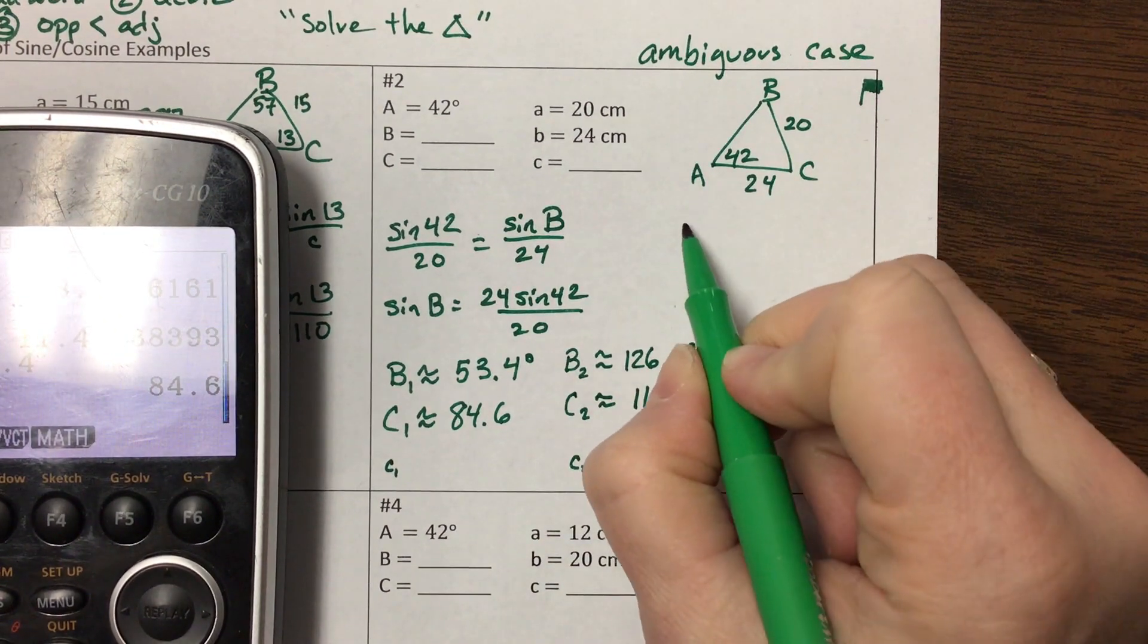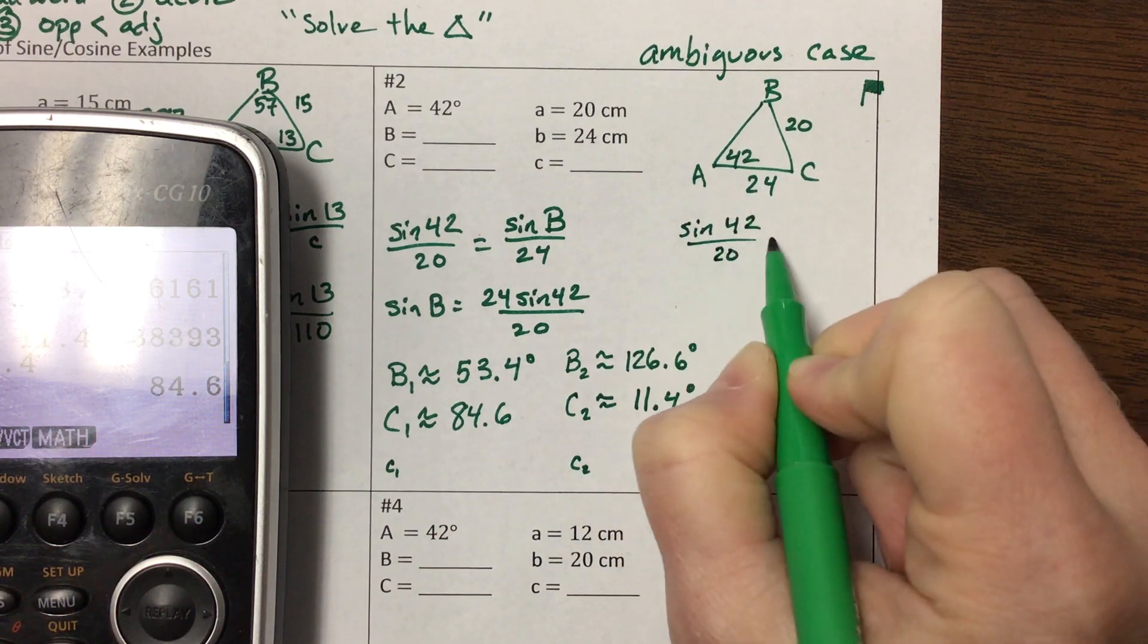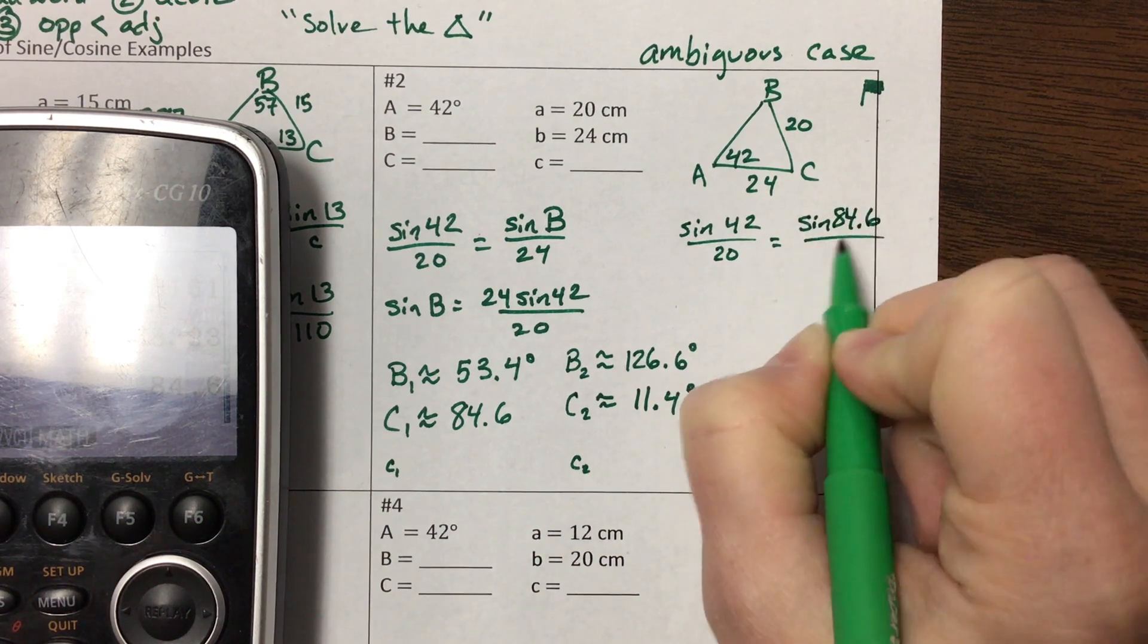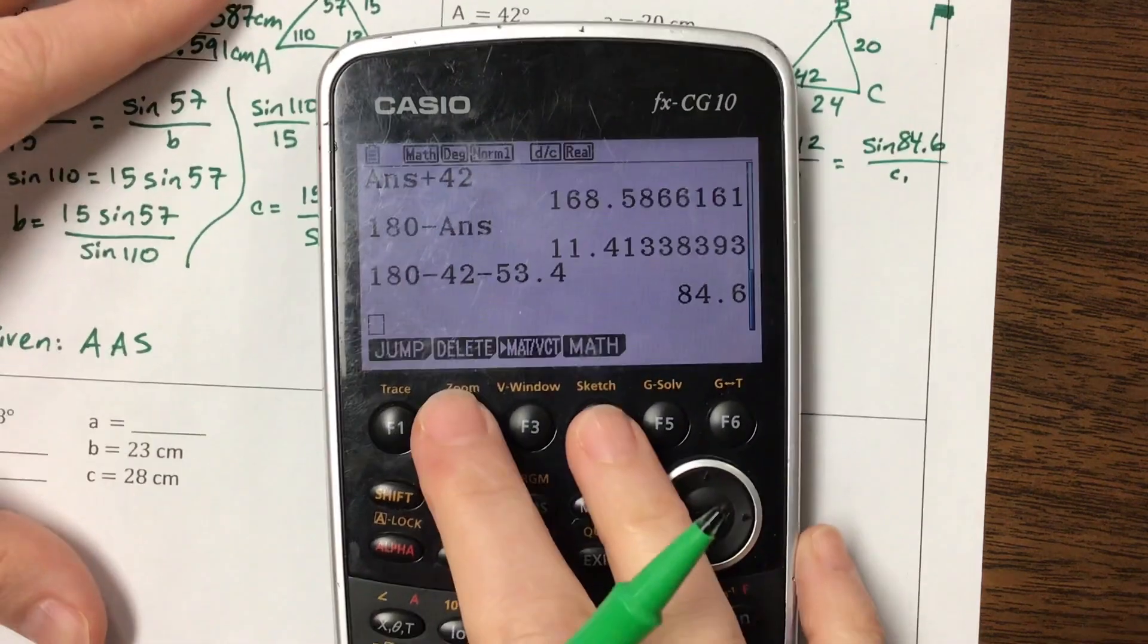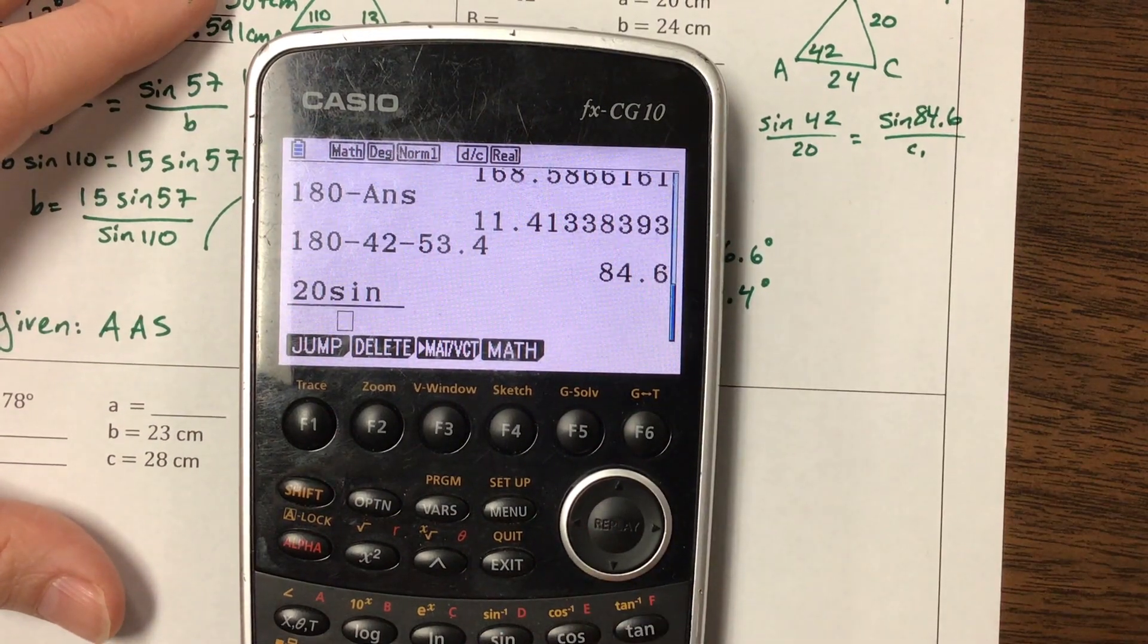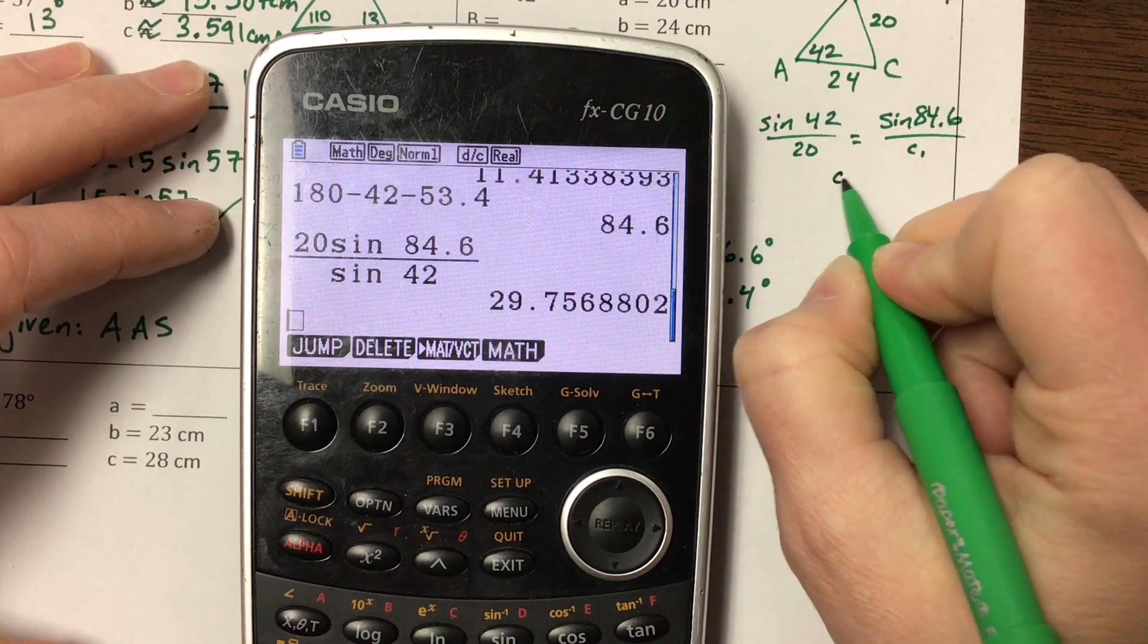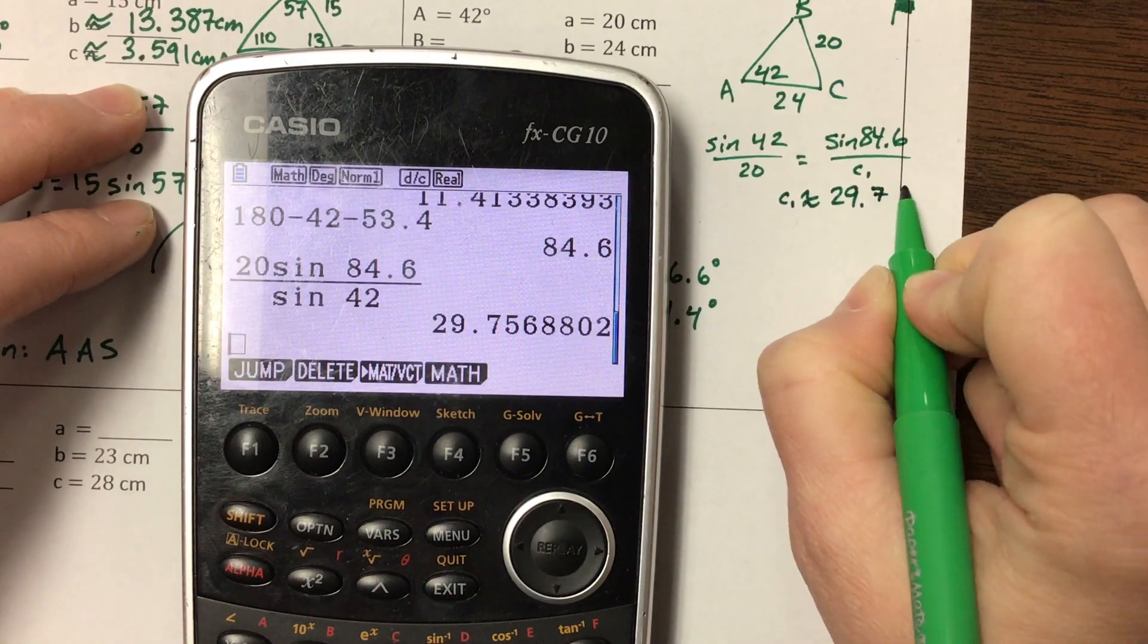Okay, so what I'm going to do is I'm going to use this sine of a over a, and I'm going to set this equal to sine of C over c, and let's do sine of C1. So sine of C1 over little c1. Okay, so then I have 20 sine of 84.6, and then that gets divided by sine of 42. Okay, and then that little c1 is about 29.757.